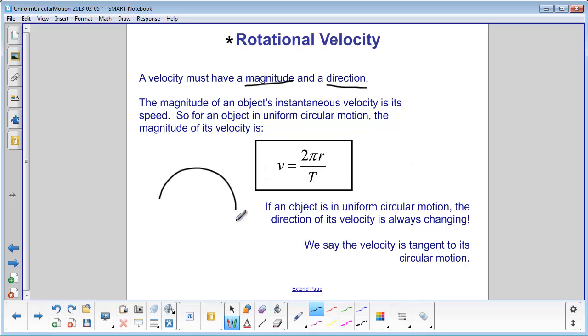So for an object moving in a circular path, we call the direction of the velocity at any given point tangent to the circle. So for instance,